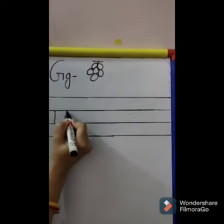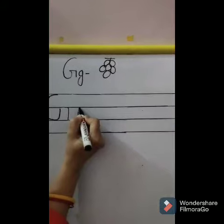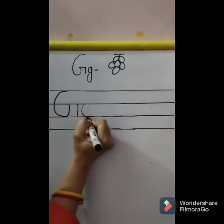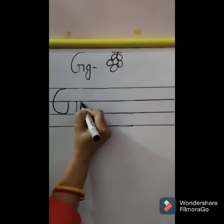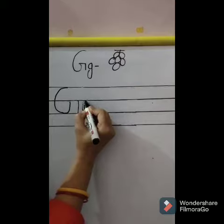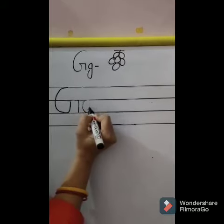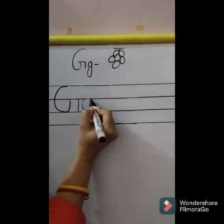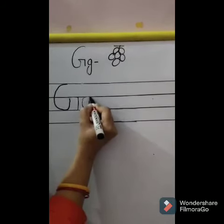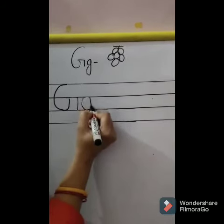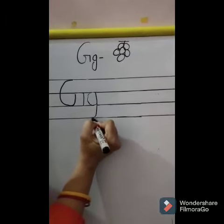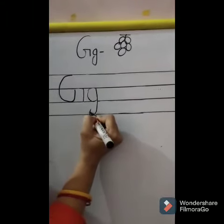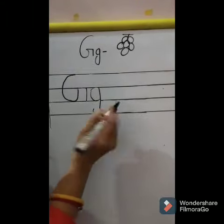Small G. Small curve middle line me, thik hai? Isko bhi thodha sa oopar leke jayenge. Phir, standing line. Thodha sa curve kar dinge. Thik hai?